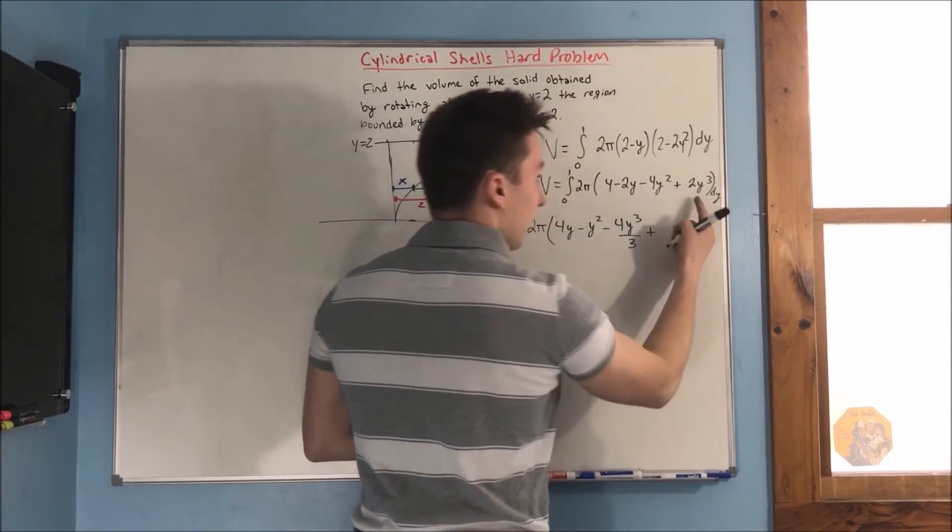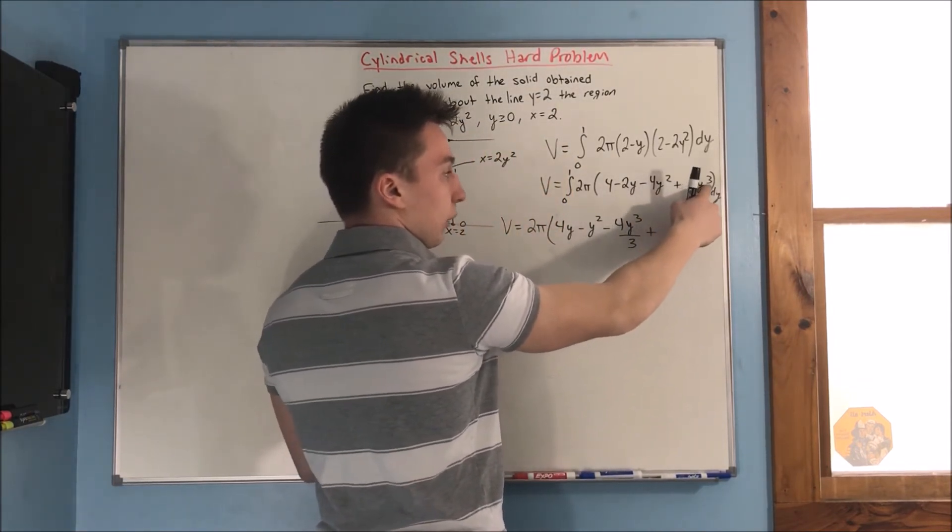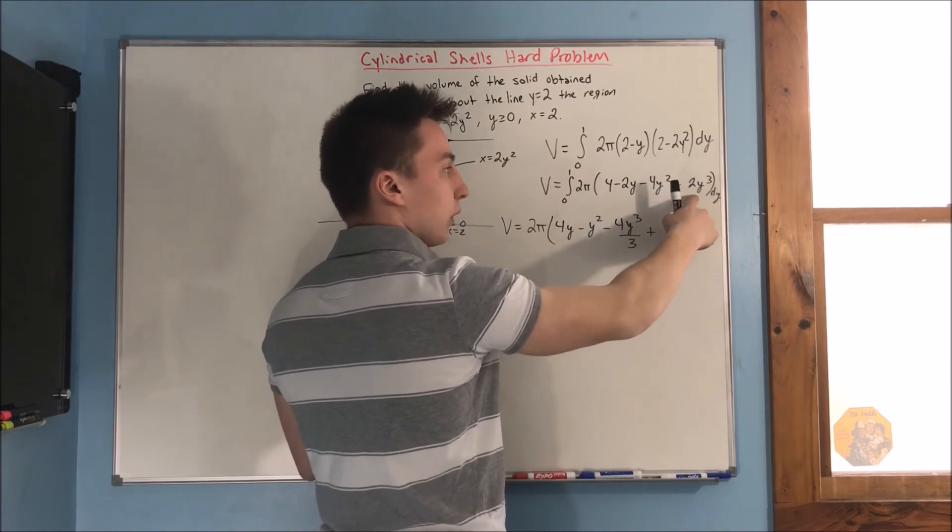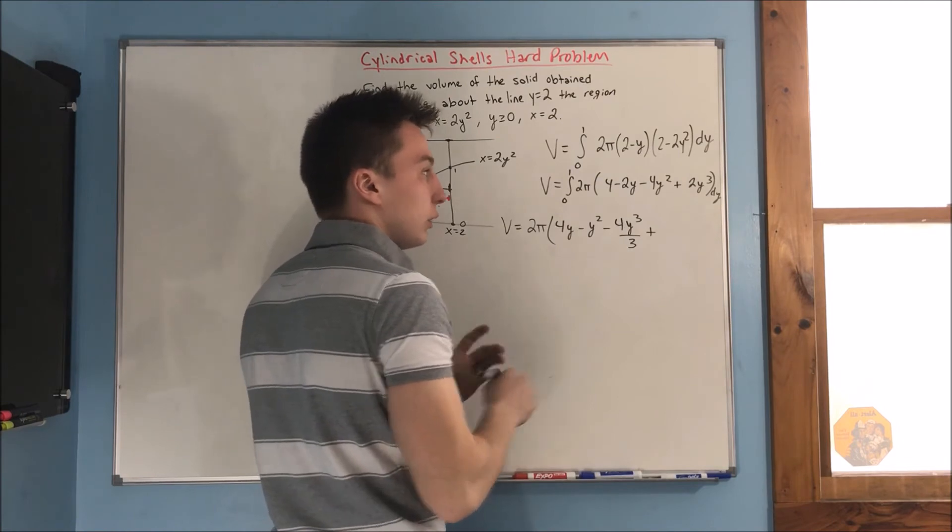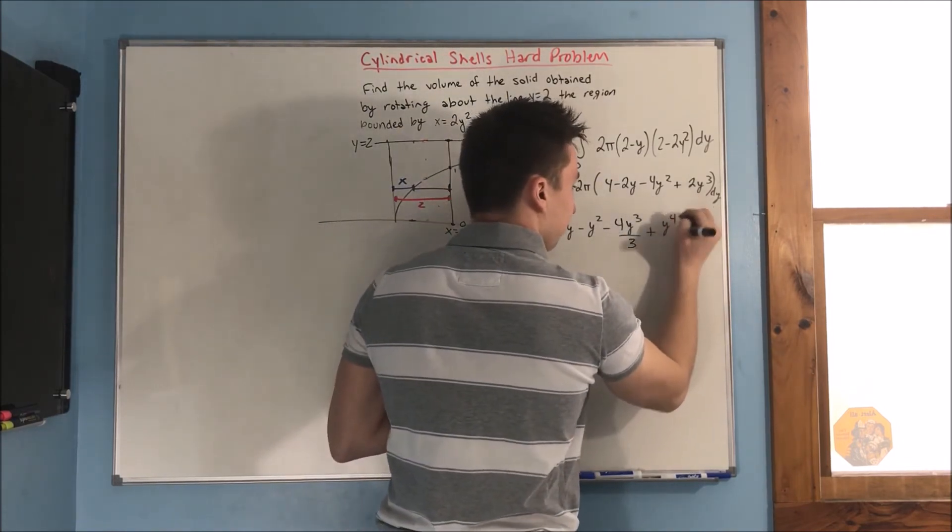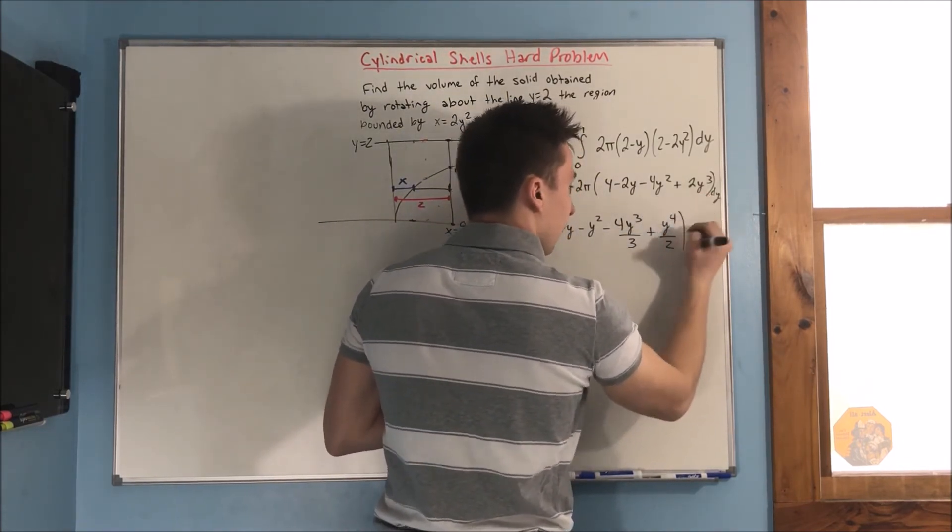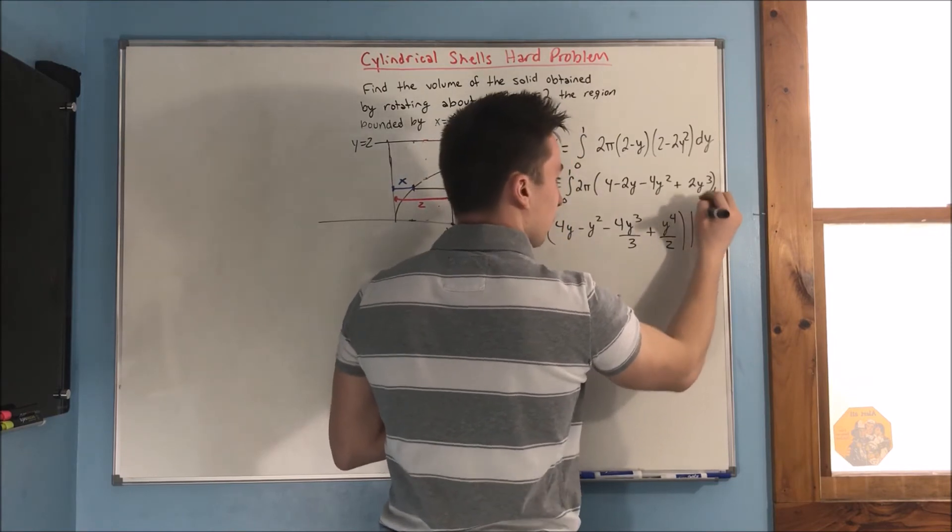Plus, it's going to be a y to the 4th over 4. So, that over 4 is going to cancel out with the 2 to make y to the 4th over 2. And that's going to be evaluated from 0 to 1.